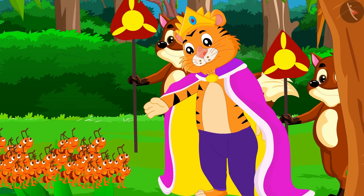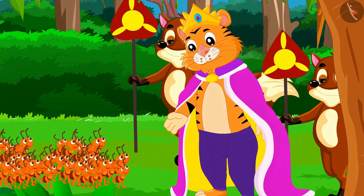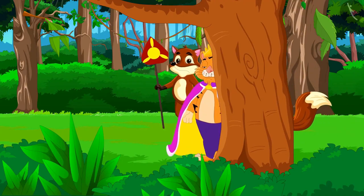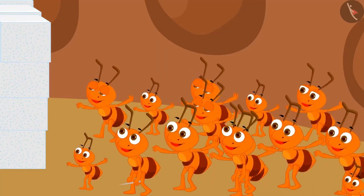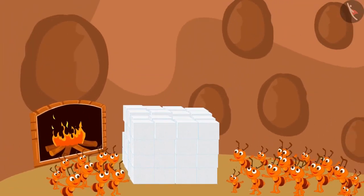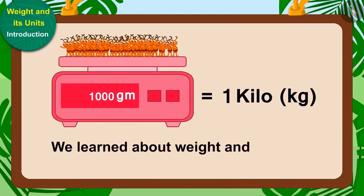The king was very impressed by the unity and wit of the ants. He gave 10 kilograms of sugar to the ants. The ants were very happy on getting 10 kilos of sugar. In this video, we learned about weight and its units. In the next video, we will learn more through interesting examples.